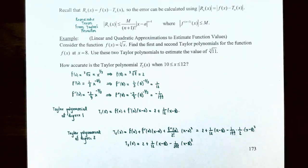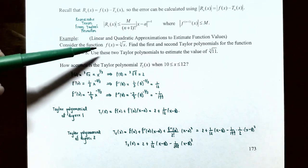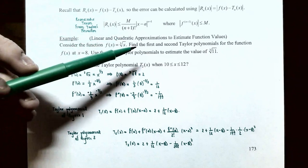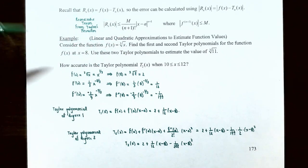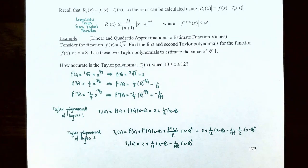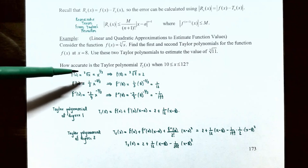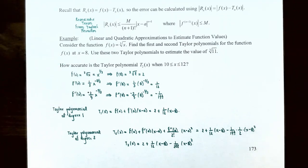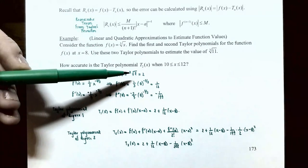Let's do an example to find linear and quadratic approximations using Taylor polynomials to estimate function values. Consider f(x) = the cube root of x, i.e., x^(1/3). Find the first and second Taylor polynomials at x equals 8, use them to approximate the cube root of 11, and determine how accurate T_2(x) is for x between 10 and 12 inclusive. The original function f(x) = x^(1/3), so f(8) = the cube root of 8, which equals 2.